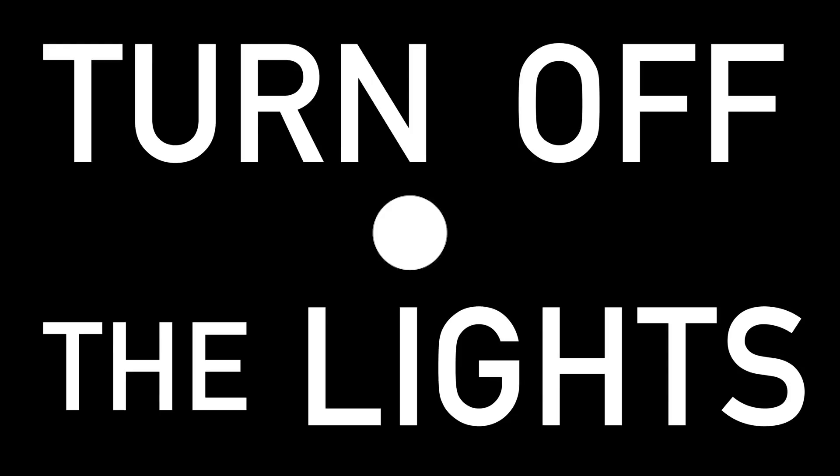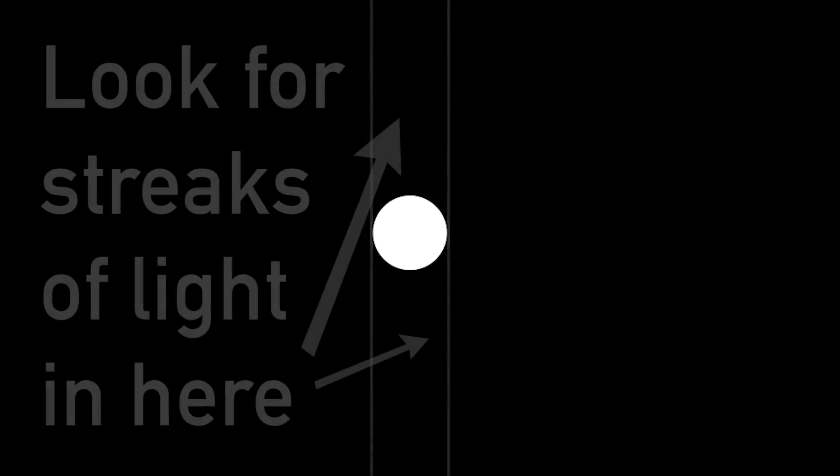Turn off the lights. Look at this dot and squint. Keep squinting until you see lines of light shooting out of the top and bottom of the dot.